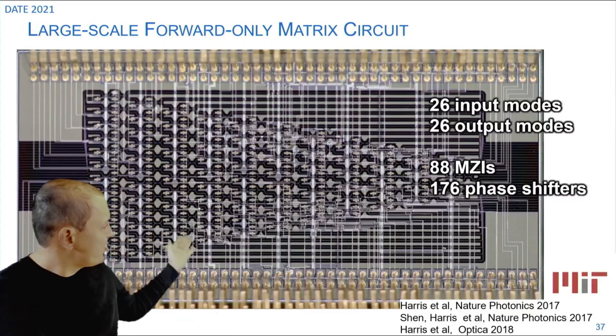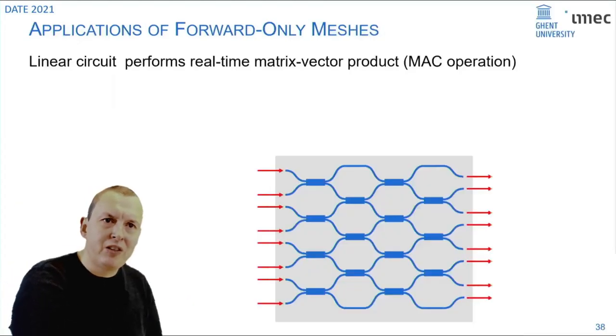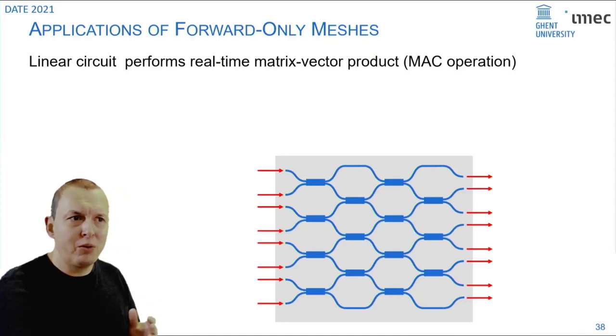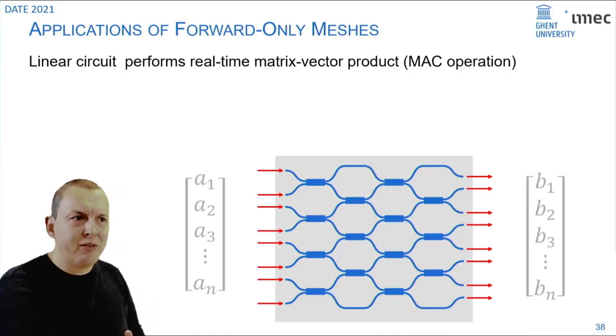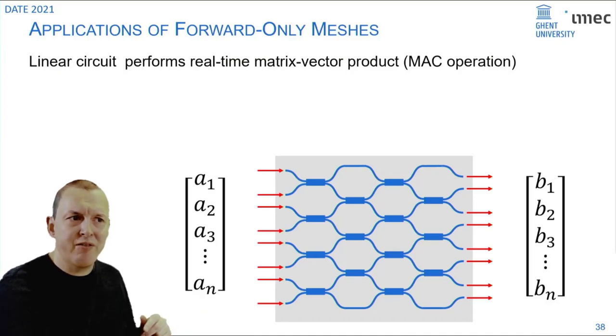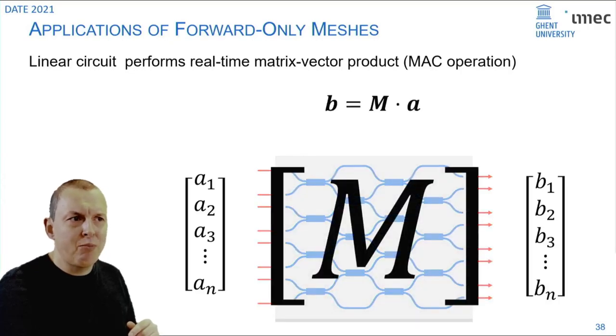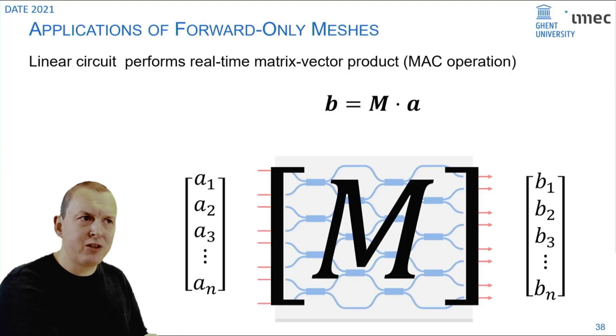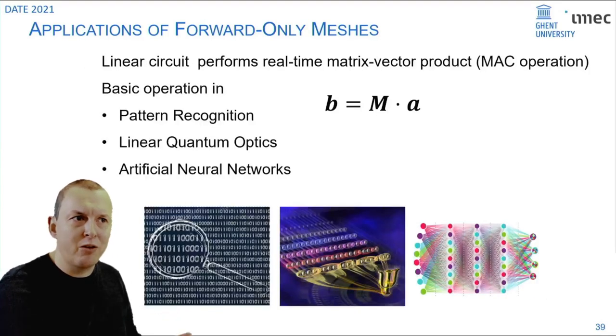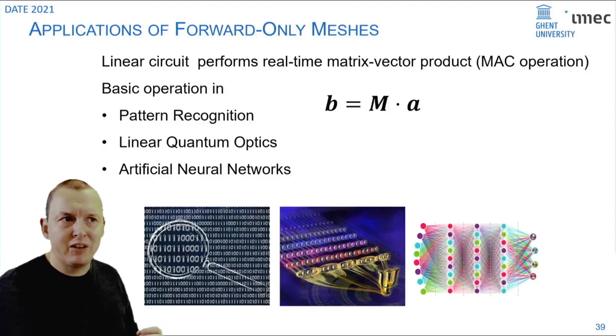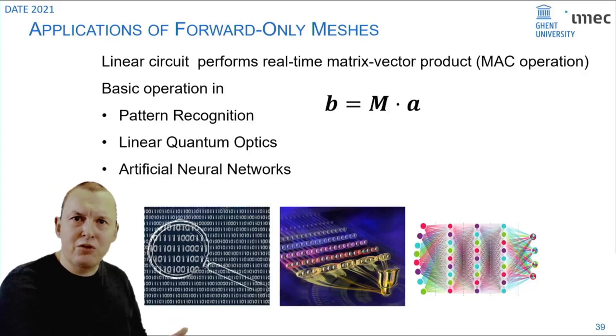Why would you want to build such a circuit? These forward only meshes are very useful if you want to do matrix algebra. If we represent the input and the output intensities and phases with complex numbers then your circuit in the middle can be programmed to represent any matrix. What you get is a matrix vector multiplication of your matrix and your input signals. These matrix vector products are also called multiply accumulate operations are basic operations in many fields like pattern recognition, neural networks and also in quantum optics.